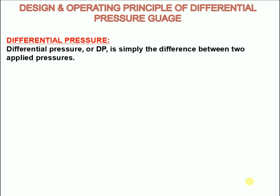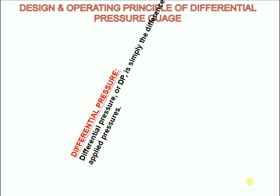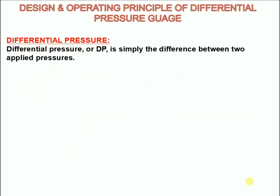First of all we will see what is differential pressure? Differential pressure, or DP, is simply the difference between two applied pressures.